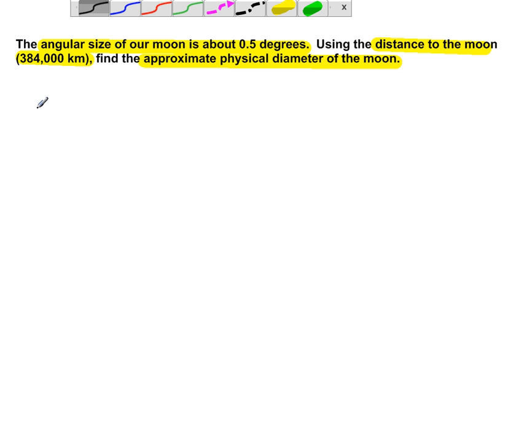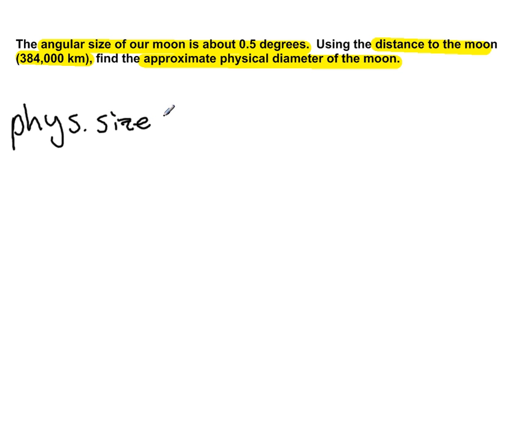Let's figure out which equation to use. We are going to use the equation that tells us the physical size is equal to the angular size times the ratio of 2π times distance all divided by 360 degrees.